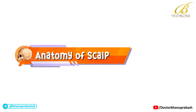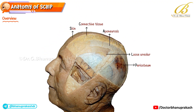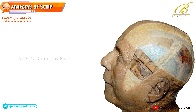The scalp is essentially a five-layered soft tissue cap that covers the upper part of the skull, or the neurocranium. An important concept students must remember is that the first three layers of the scalp behave like a single functional unit — these layers move together as one sheet, and this combined structure is known as the scalp proper.